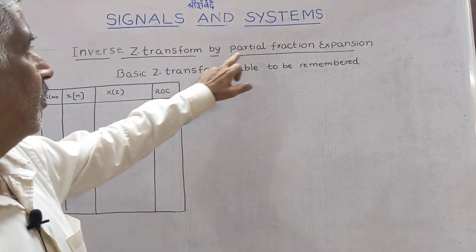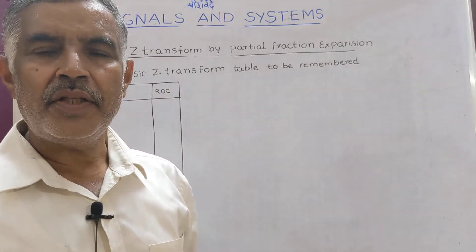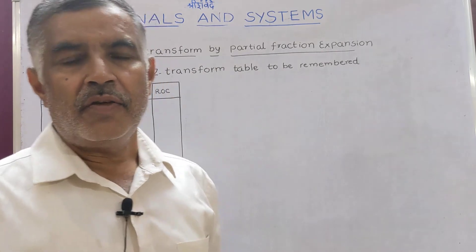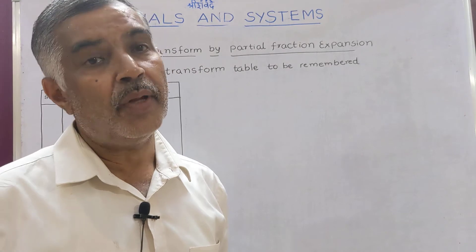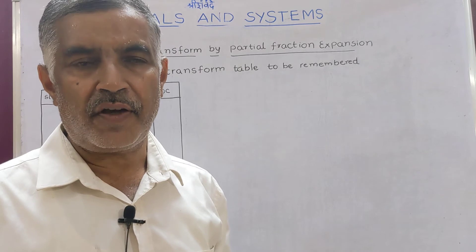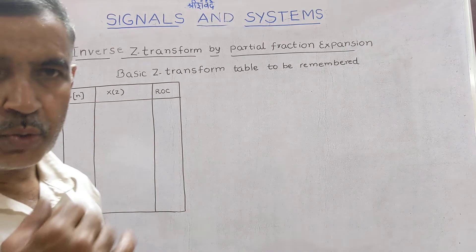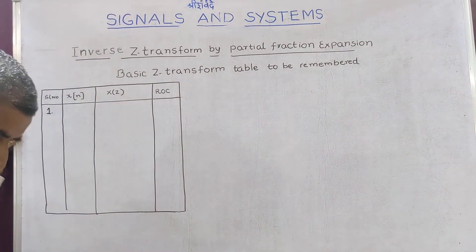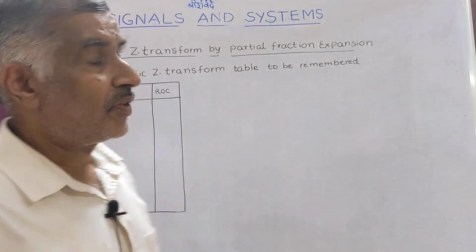We take the partial fraction expansion method of doing inverse Z transform. This method very much rests on what is known as the basic Z transform pair table. We have to very well remember the Z transform for a few functions. I will go through these functions one by one.